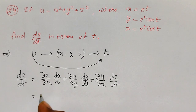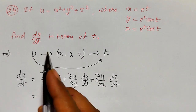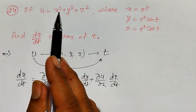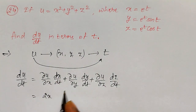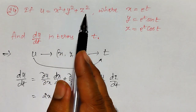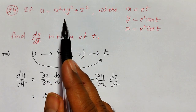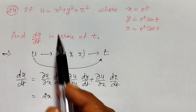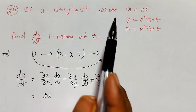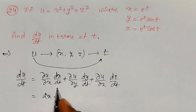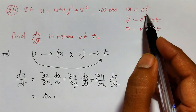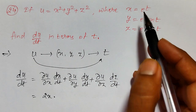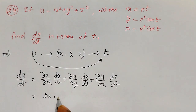To find this, the partial derivative ∂u/∂x: differentiating with respect to x, x² becomes 2x, y² is 0, z² is also 0. So ∂u/∂x = 2x. Multiply by dx/dt. Since x = e^t, the ordinary derivative dx/dt = e^t.